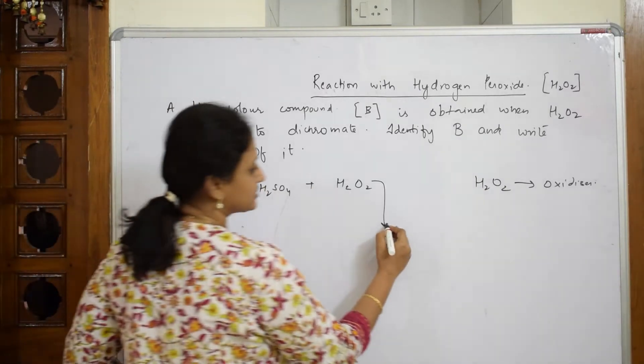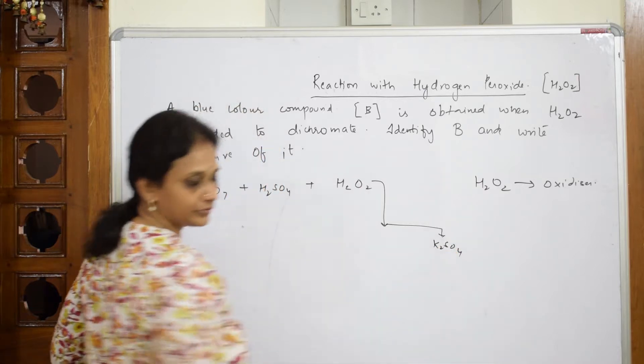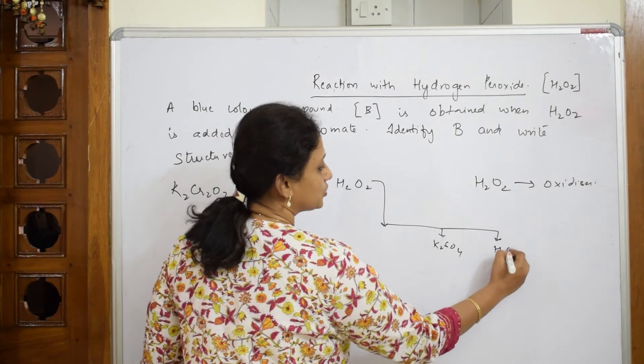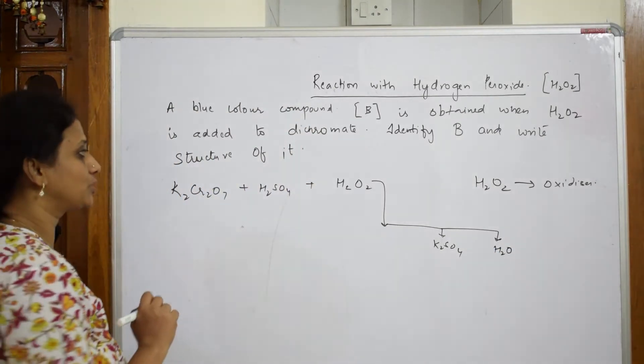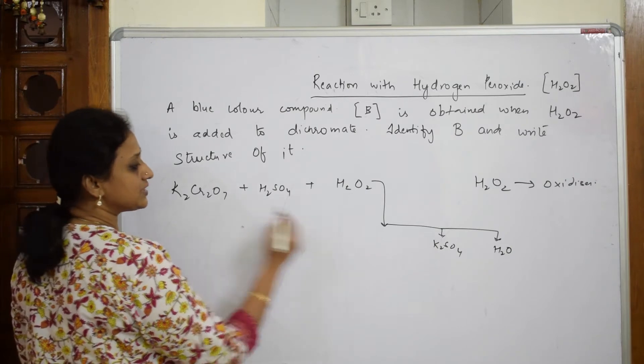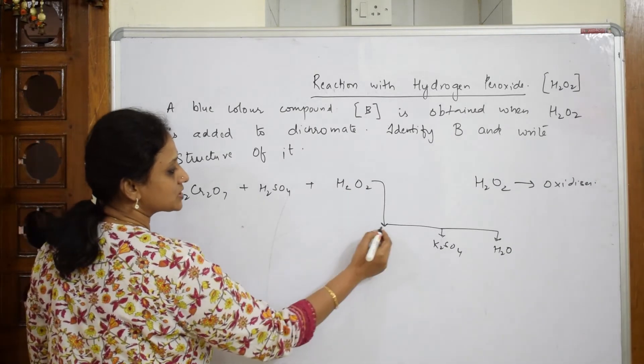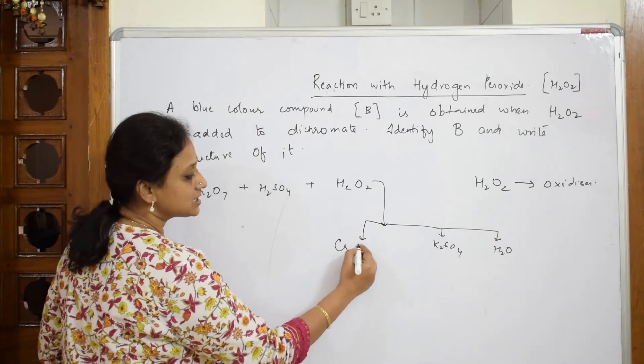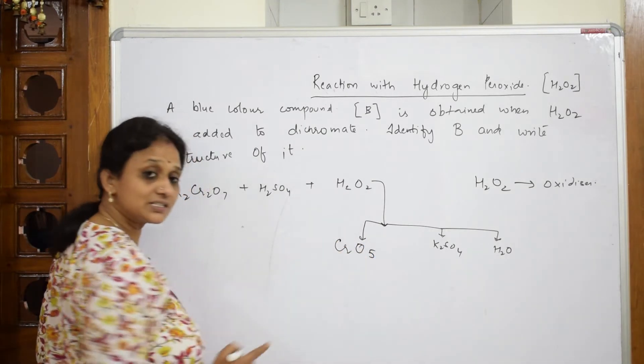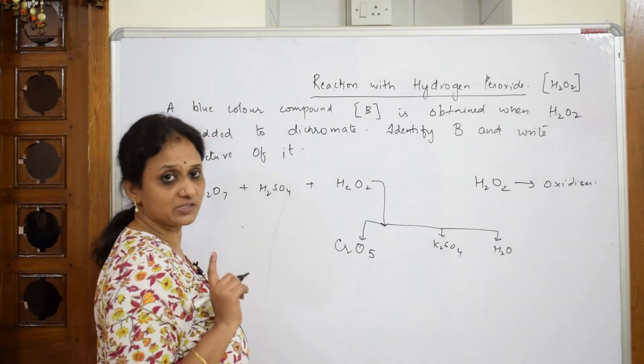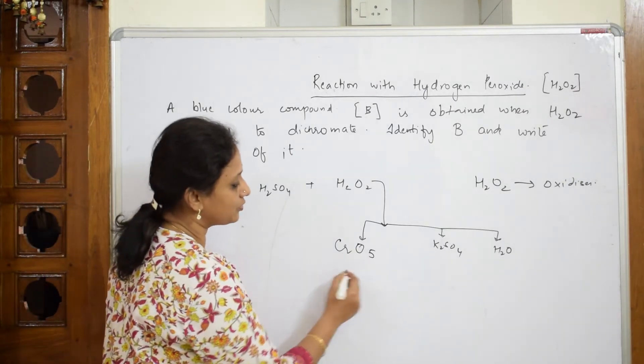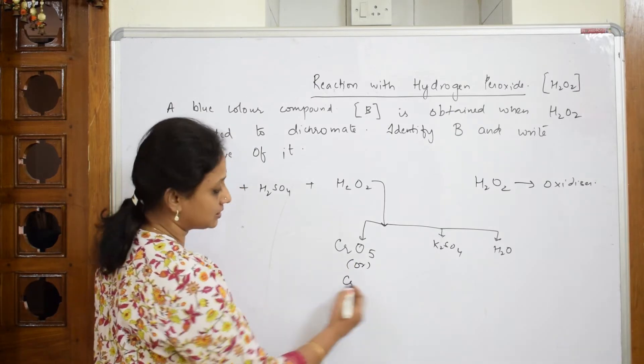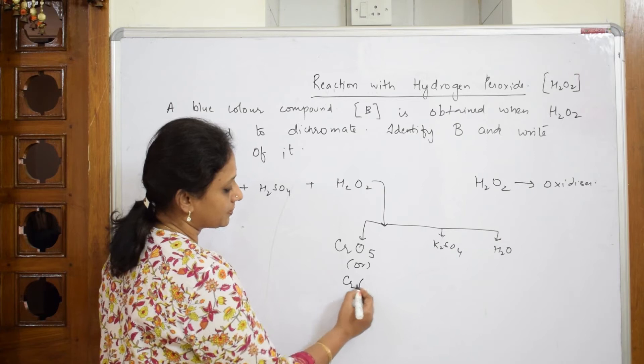What is that blue colored compound? First, let us take out the products. K₂SO₄, as we know, we are going to get K₂SO₄ - we've done in earlier reactions also - and water also, H₂O. Important thing, this is your blue colored compound. Here the Cr₂O₇ in the presence of peroxide is going to form a new compound, CrO₅. What is CrO₅? Chromium peroxide.